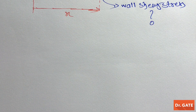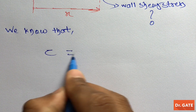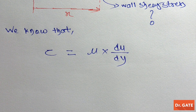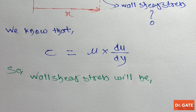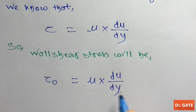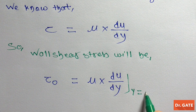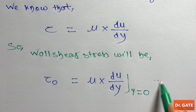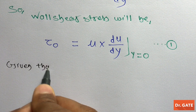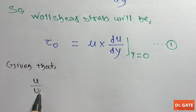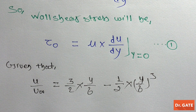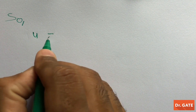From our previous class, we know that tau is equal to mu × du/dy. So wall shear stress will be τ₀ = mu × d(u)/dy at y = 0. Let this be equation 1. It is given that u/u∞ is as shown, so from here we can get u equal to the expression shown.